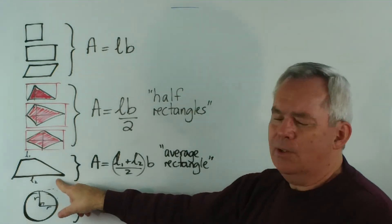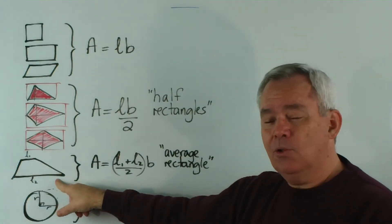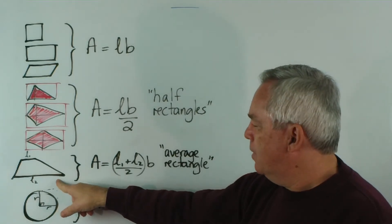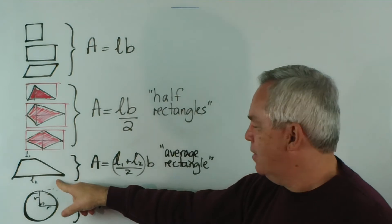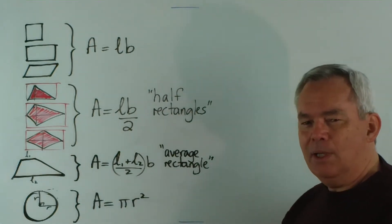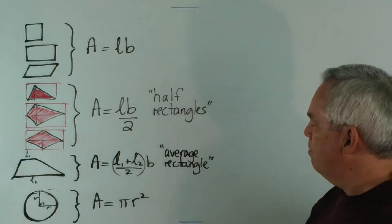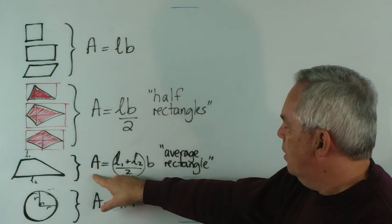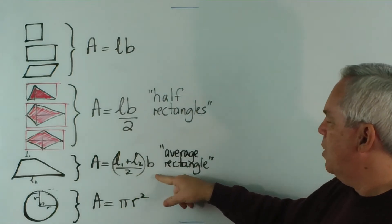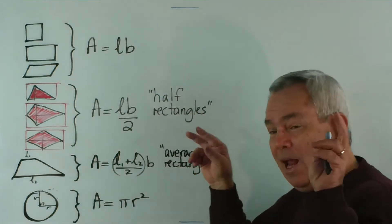The trapezium... sorry, I forgot to mention it's called a trapezoid in the United States. I might talk about the history of that in another video, but in other English-speaking countries it's called a trapezium. The area is the average length times the breadth, so you might think of it in terms of an average rectangle.